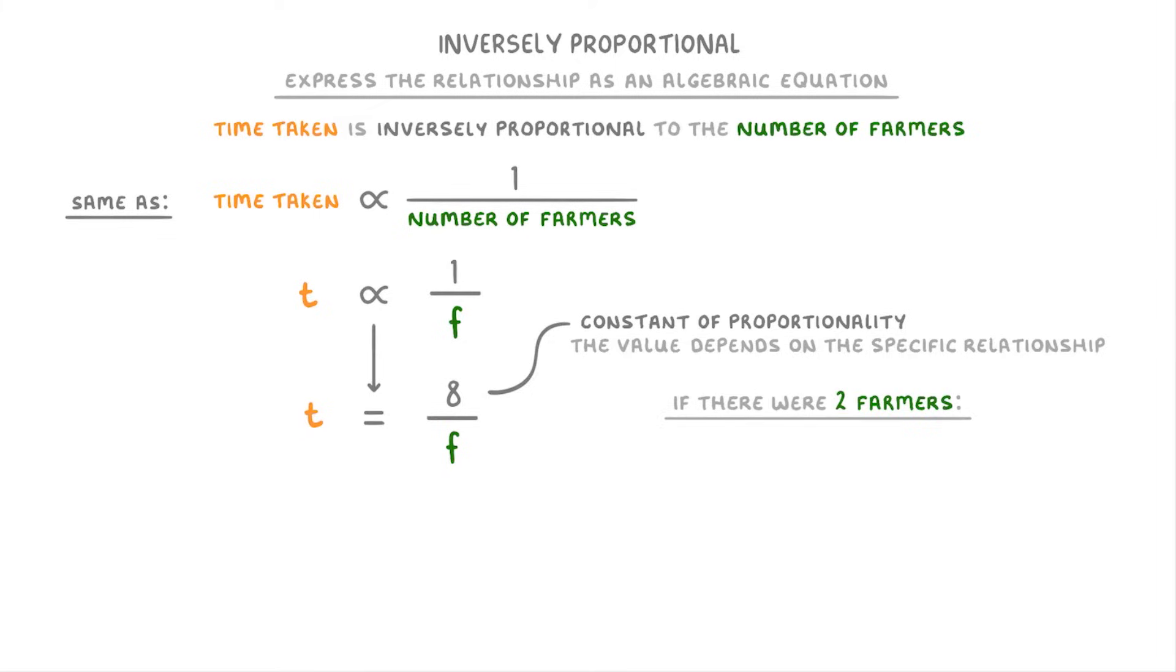For example, if there were 2 farmers, then f would be 2. So we could put the 2 into our equation, and find that time would be equal to 8 divided by 2. So it would take them 4 hours to pick all of the apples.